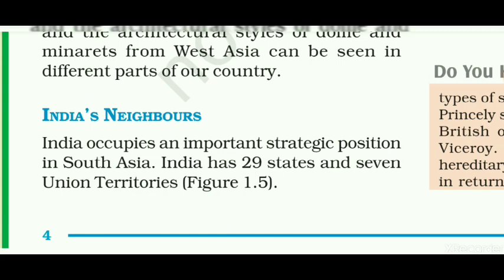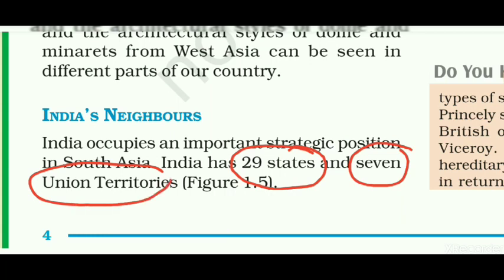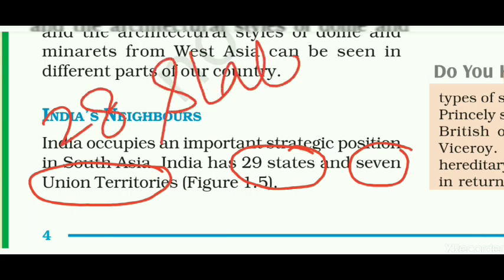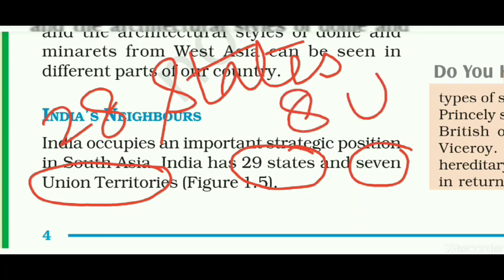India has 29 states and 7 Union territories — actually we have already learnt that India is situated in the southern as well as central part of the Asian continent. But this data has been changed now, and at present there are 28 states and 8 Union territories. After the completion of the chapter, I will explain India's states and Union territories in a detailed way.